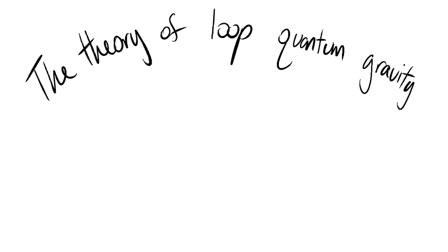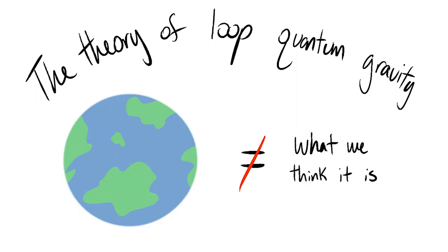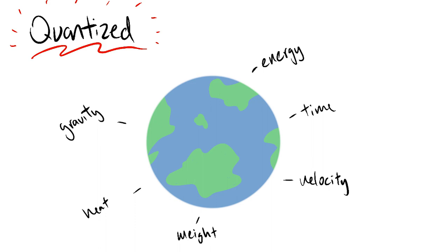According to the theory of loop quantum gravity, our world is not what it seems. Everything in our world is quantized, meaning that eventually there's a set smallest amount that you can't further divide.